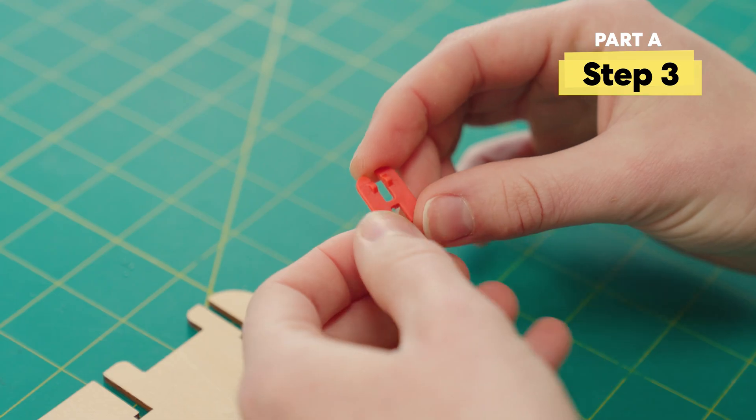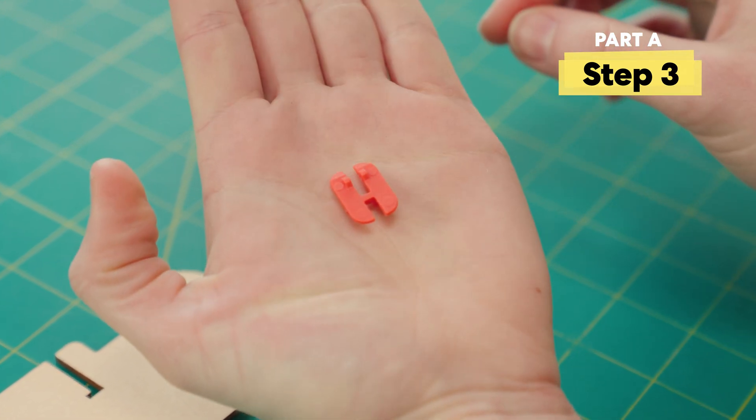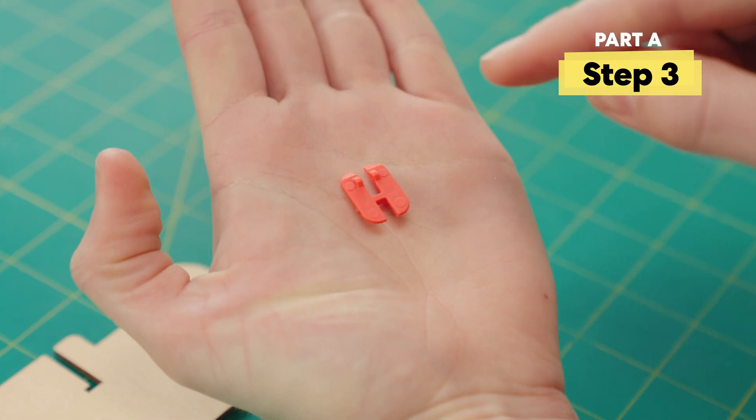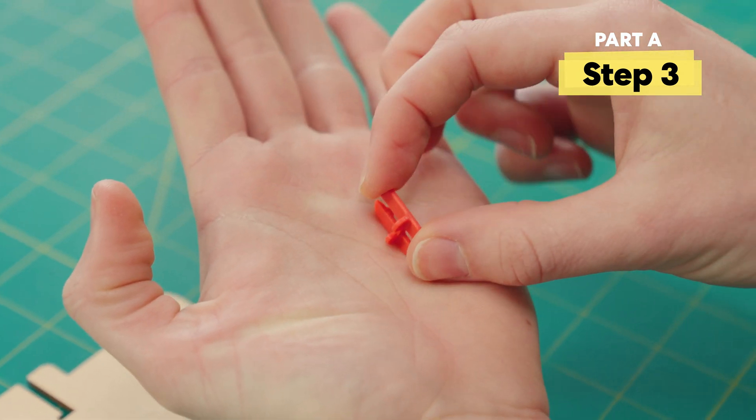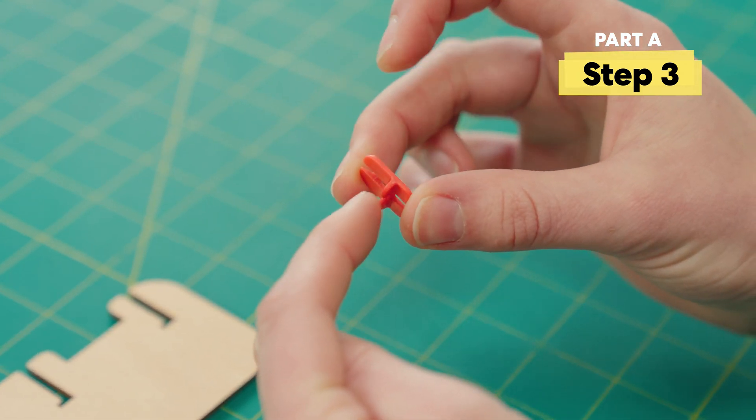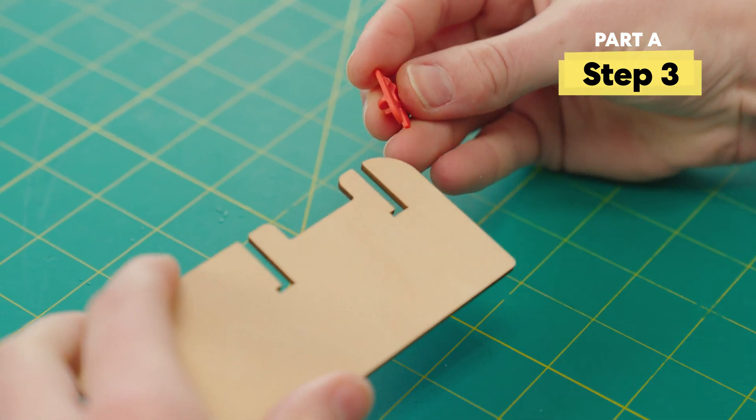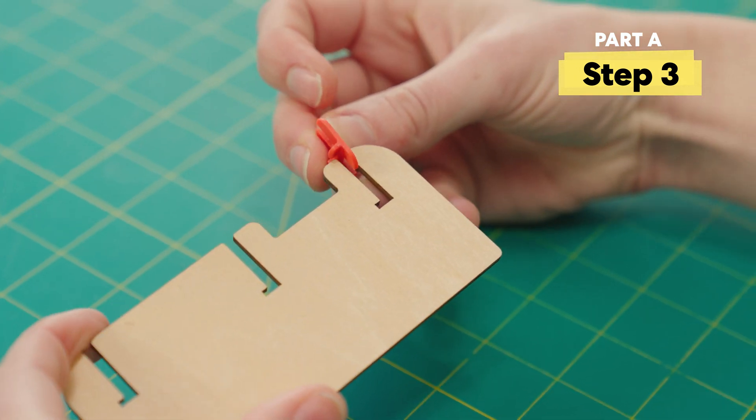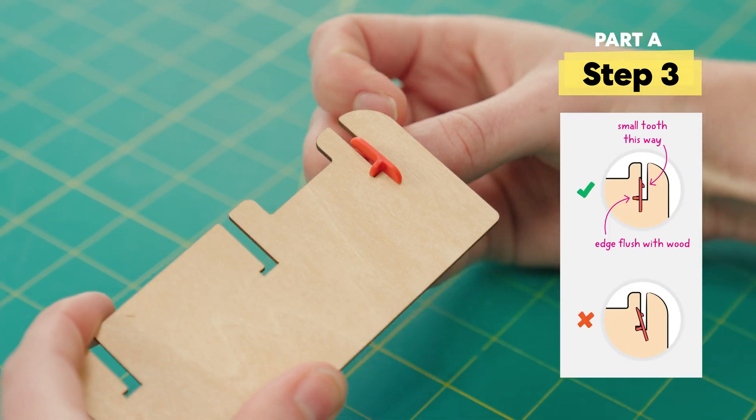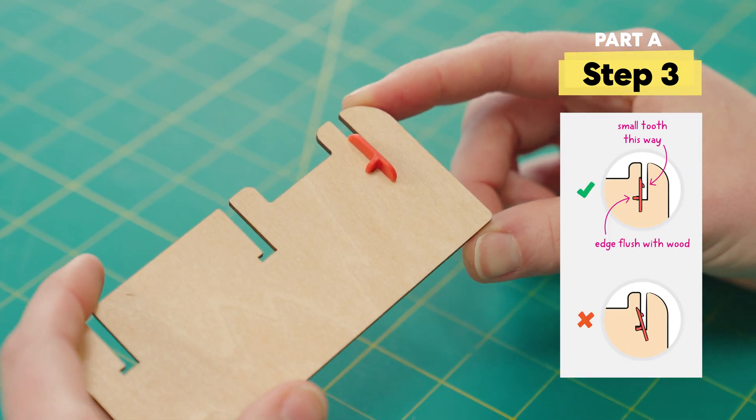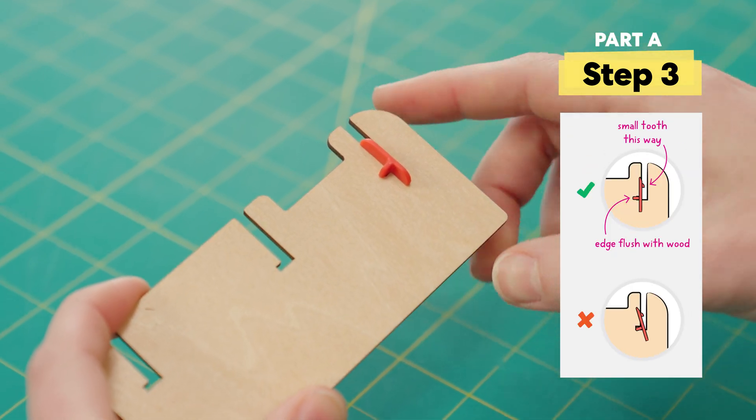Next we're going to grab one of these little clips that looks like an H. You'll notice that there's a big ridge along the backside. We're going to put that ridge pointing in the same direction as the notches at the bottom of the slot. So going down this way, and then push it over.